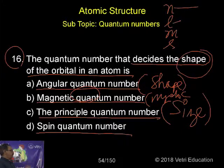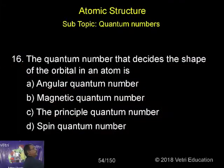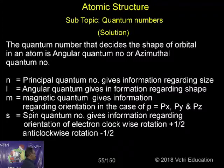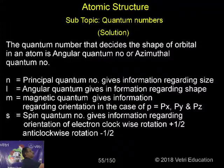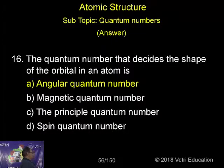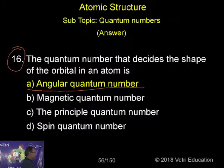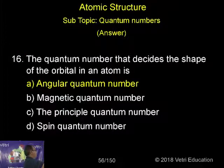The correct answer is the angular quantum number. l decides the shape — the quantum number that decides the shape of the orbital is the angular quantum number or azimuthal quantum number. So for question number 16, the correct answer is angular quantum number.